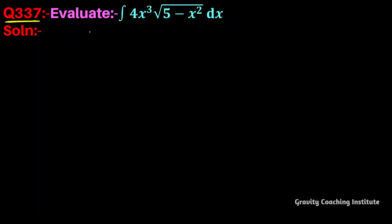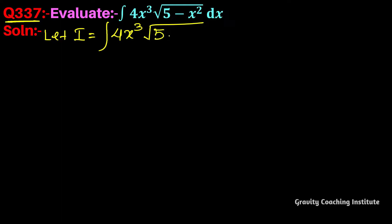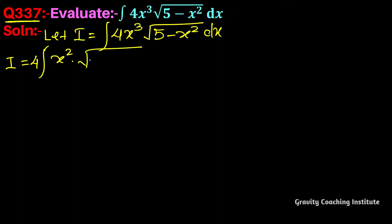Question number 337: evaluate the integration of 4x³ into square root of (5 minus x²) dx. Let I equal to integration of 4x³ into root over (5 minus x²) dx. We rewrite x³ as x² into x, so the integral becomes integration of x² into root over (5 minus x²) into x dx.